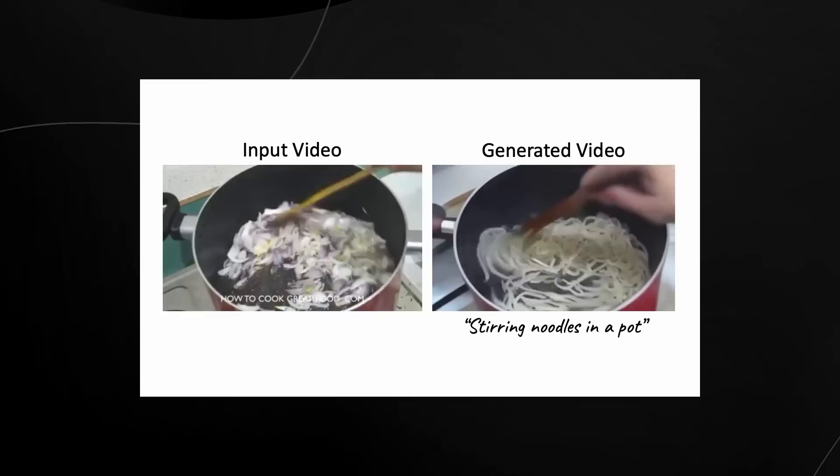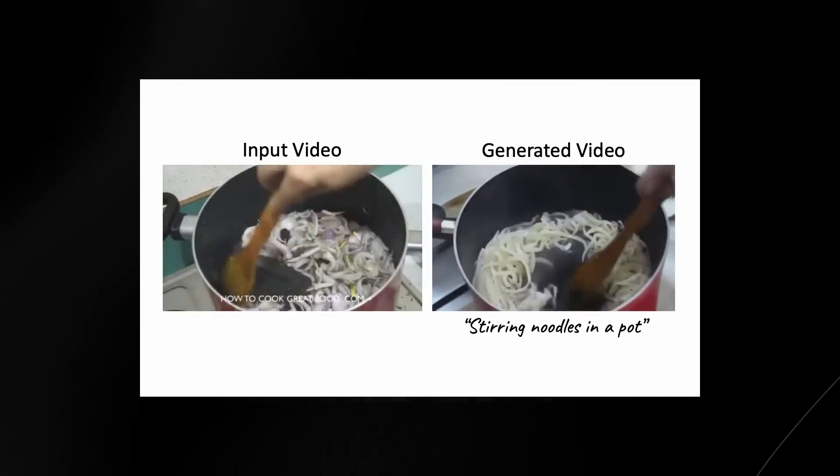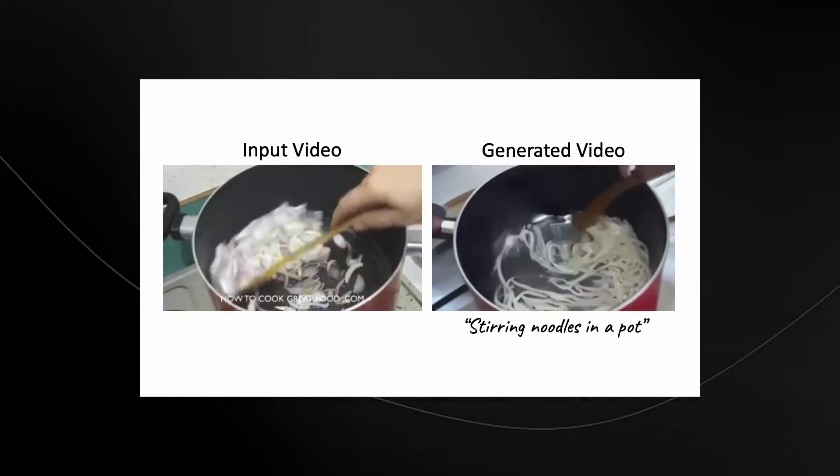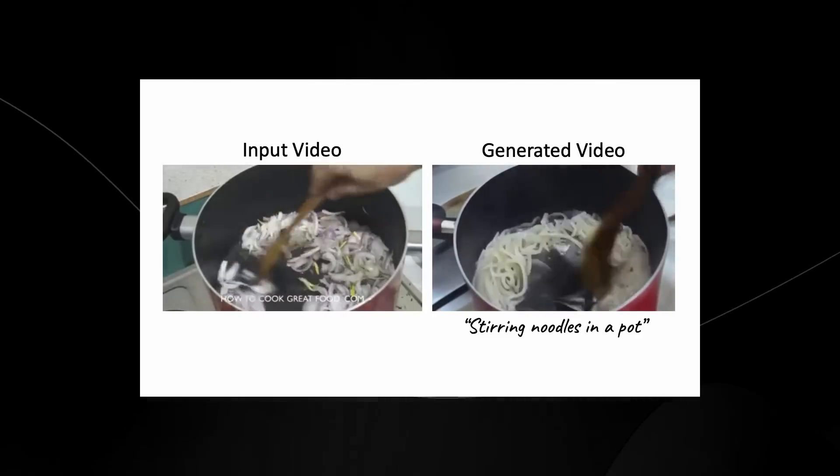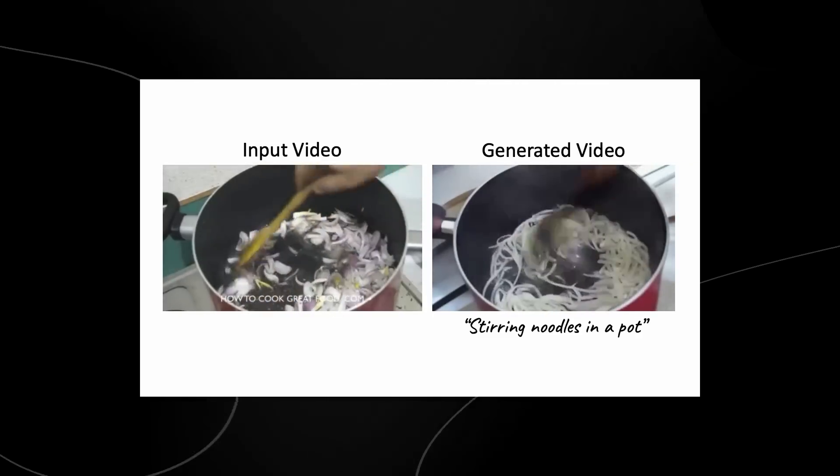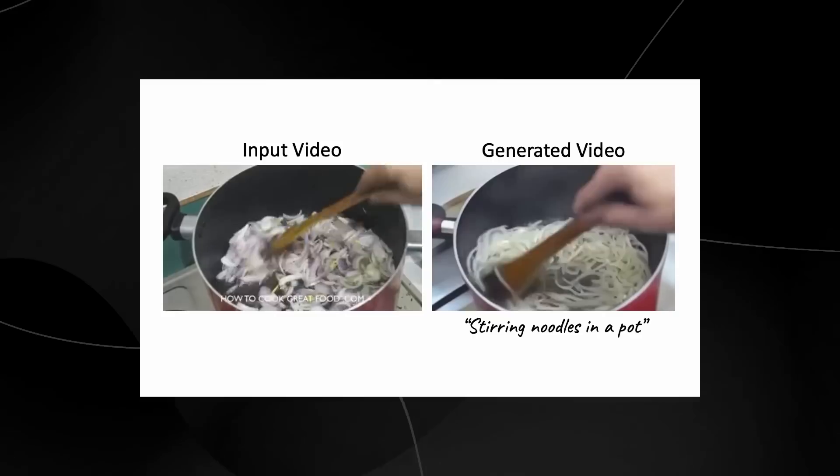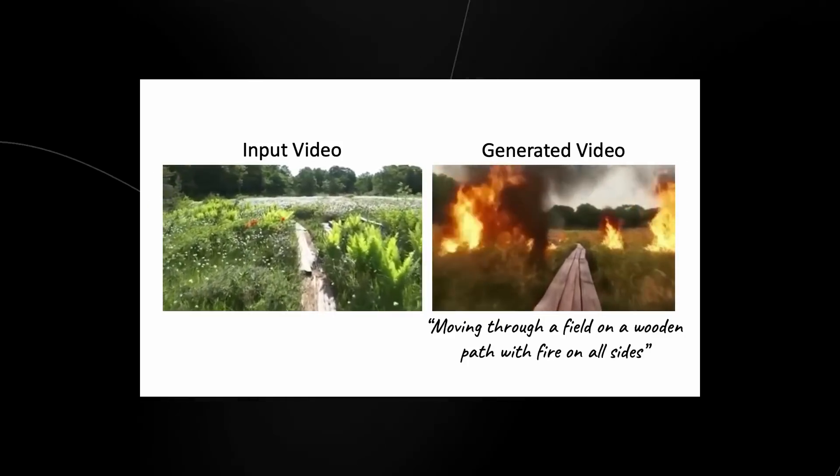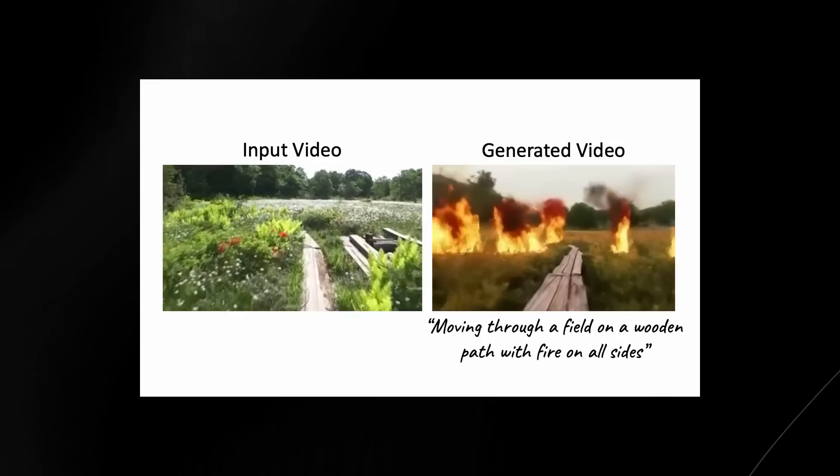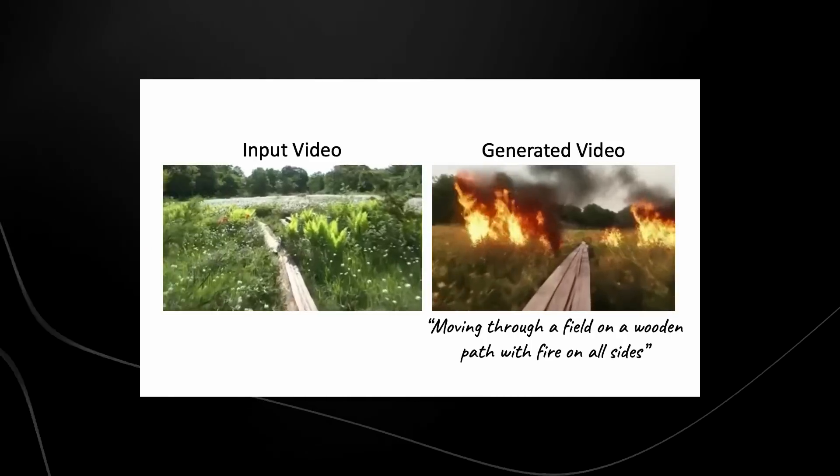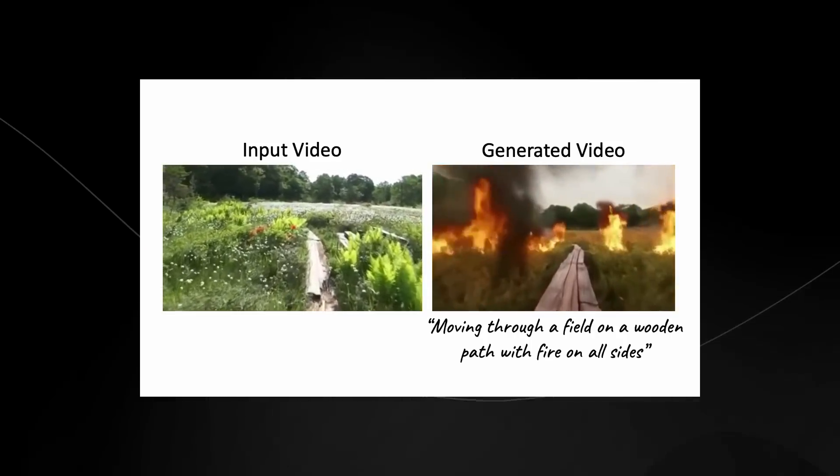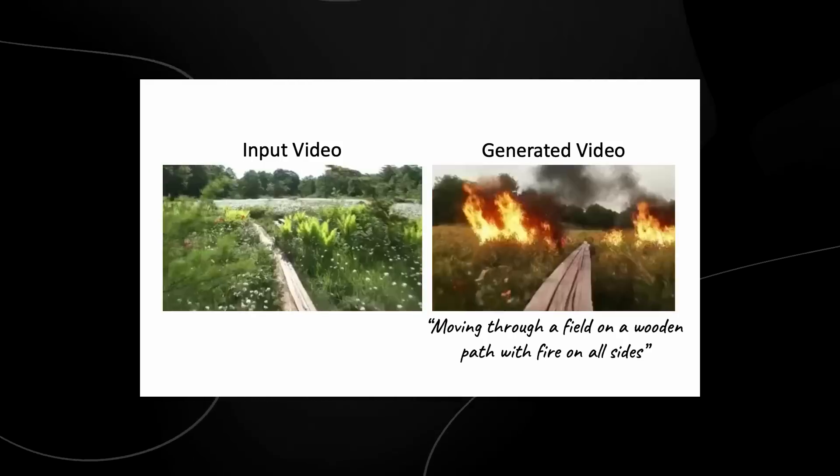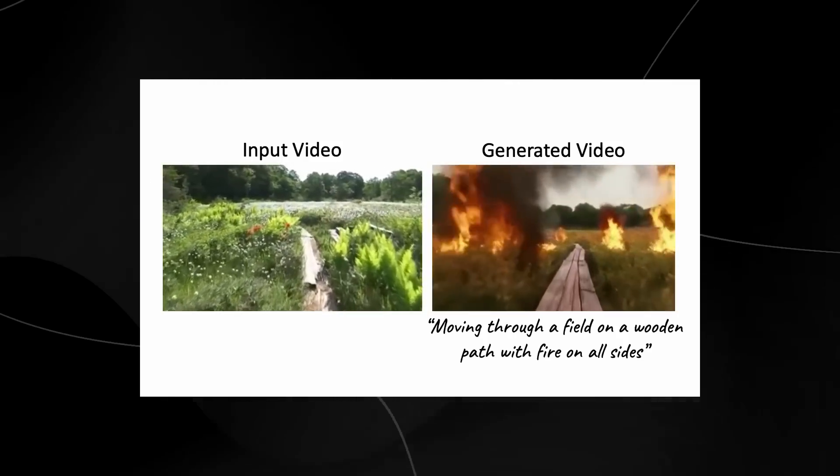But like I said, there are some other examples that I want to show you from Google Dreamix in video editing aspect. You can see the input video is them cooking some onions. And then they added the text prompt of stirring noodles in a pot. And you can see right here they are stirring noodles in a pot. So when it comes to the video editing aspect, these examples that I'm showing you right now showcase how powerful this new software is. You can also see that it says moving through a field on a wooden path with fire on all sides. And you can see that from the input video, the generated video is honestly really, really good.